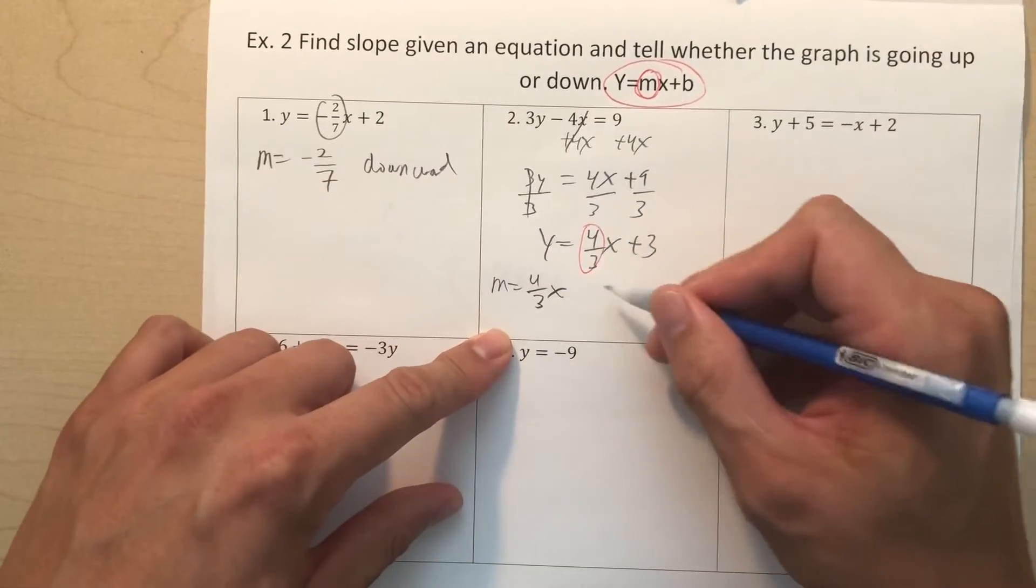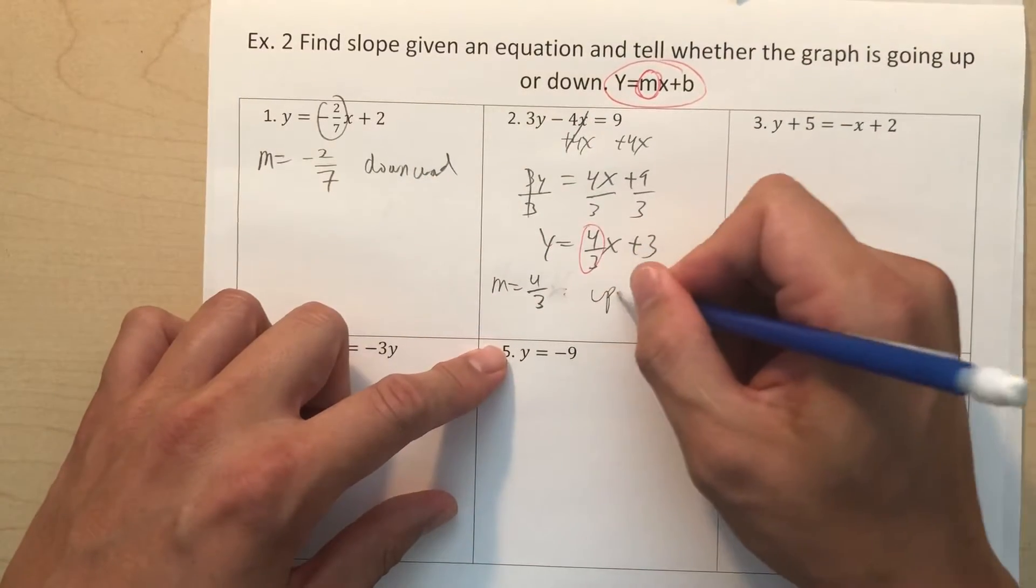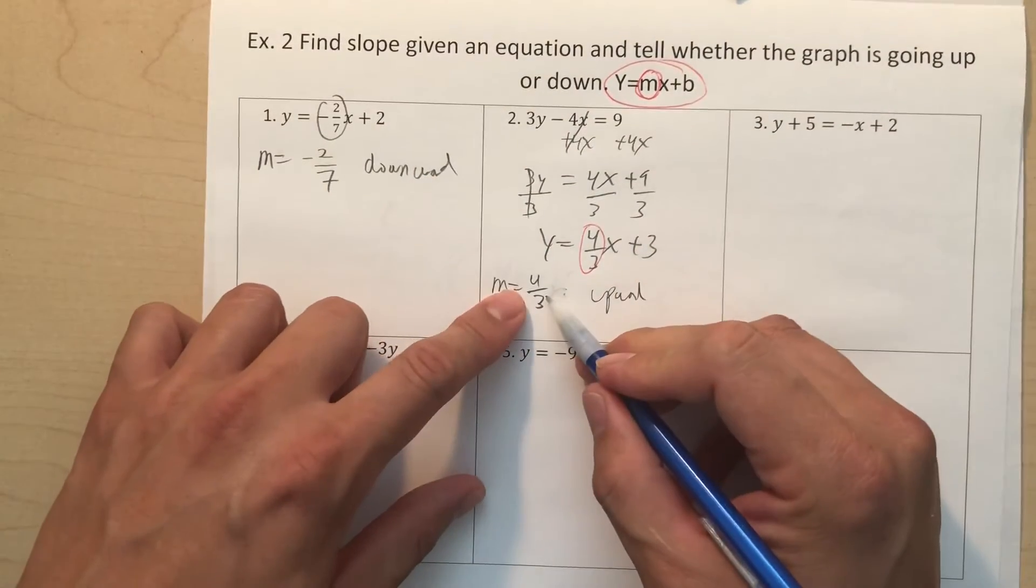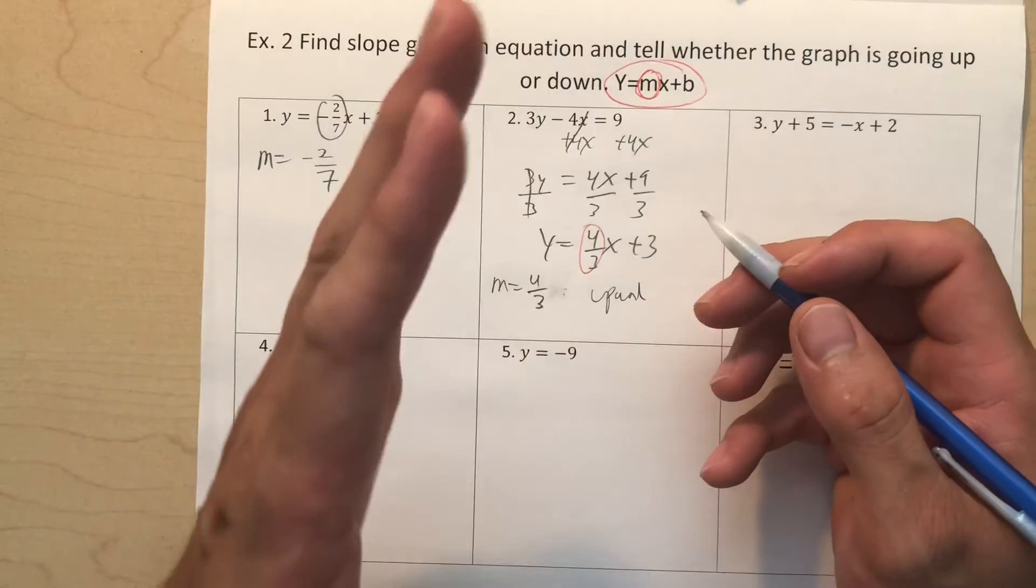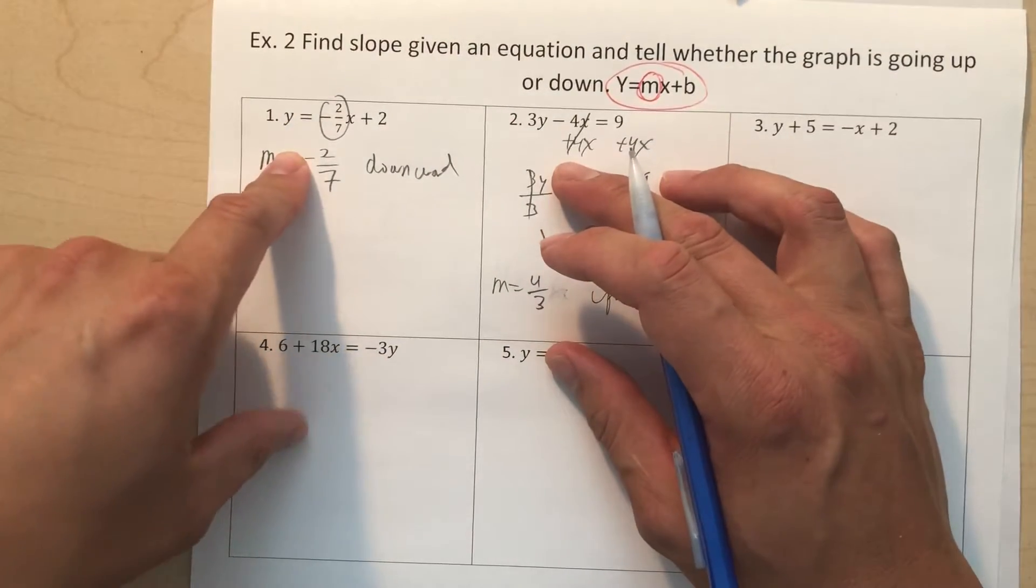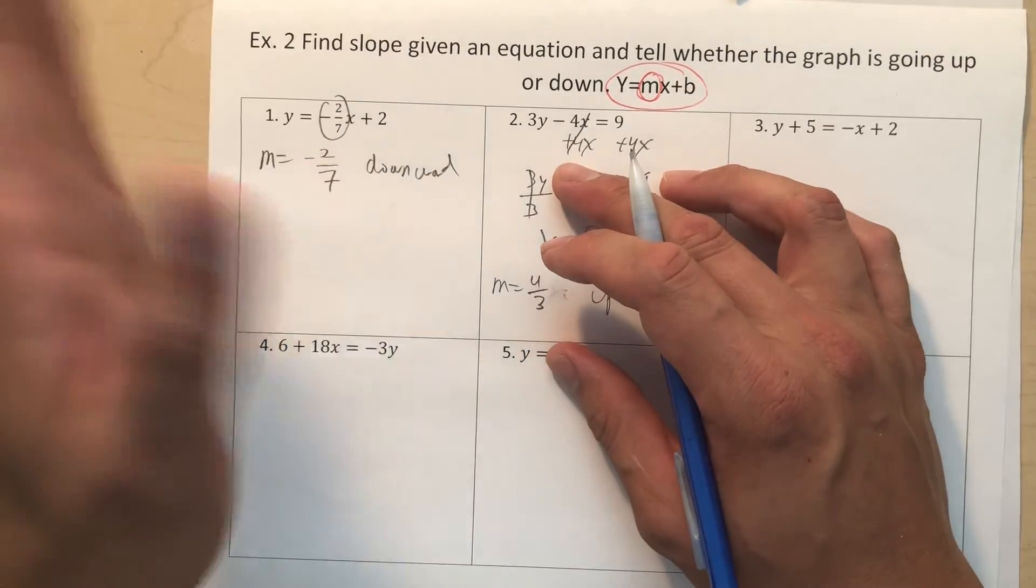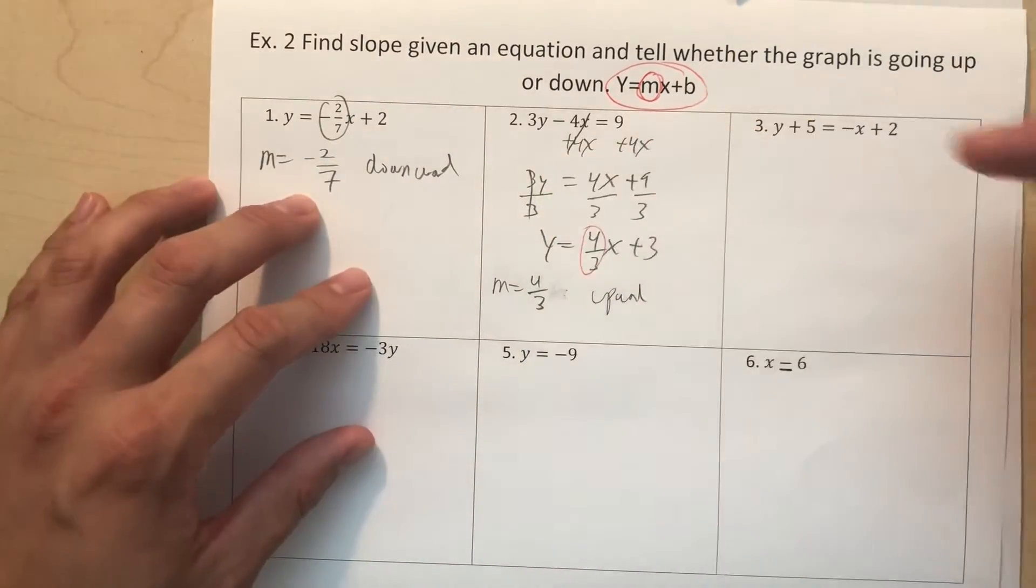And this one is positive. Oops, my bad. You don't need the x for the slope, and then you can just write down upward. Now, this one is larger than the slope of 1, so you know it's going steeper. Remember, it's steeper. And this one here is actually less than 1 without the negative sign, right? 2 over 7, negative, so it's actually going flatter.